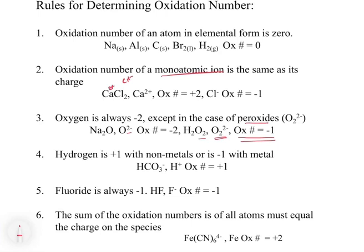Fluoride is always minus one. So like the other halogens, chloride, bromide. The rules that apply to the periodic table generally apply to the oxidation numbers.